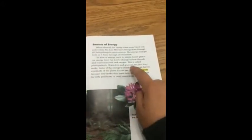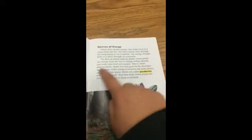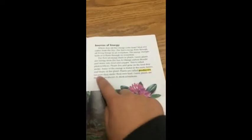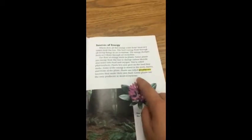Plants live and grow on the food they make. Some of the energy is stored in the roots, leaves, and fruits of the plant. Plants are called producers because they make their own food. Green plants are the only producers in most ecosystems.